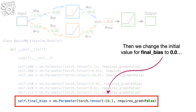The original BasicNN graph shows effectiveness equals 1 when dose equals 0.5, which is correct. In contrast, the BasicNN_train graph shows effectiveness equals 17 when dose equals 0.5 — way too high. So we need to train the neural network to optimize B_final. To create the training data, we create one tensor called Inputs with three doses: 0, 0.5, and 1. And another tensor called Labels with the observed output values: 0, 1, and 0. Now we are ready to optimize the last bias, B_final.